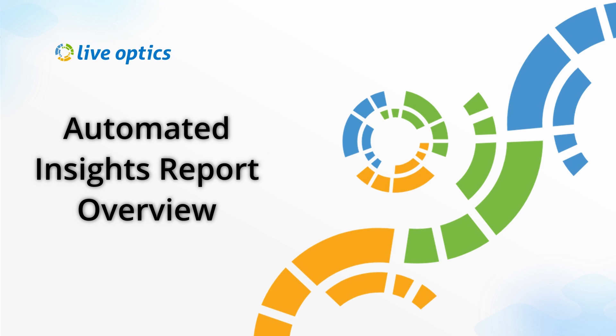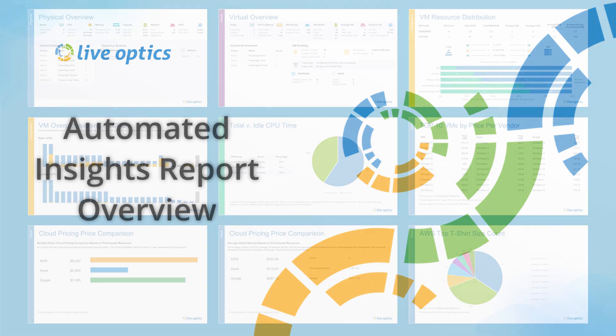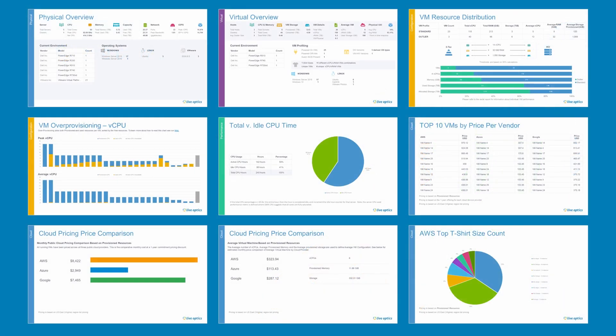In this video, we'll explore the contents of the Automated Insights Report, also known as the AIR Report. The main objective of the AIR Report is to provide you with comprehensive insights into both physical and virtual environment configurations and performance from the Optical Prime project.